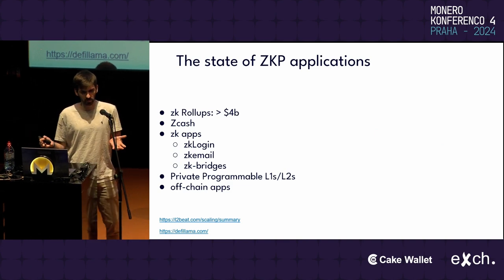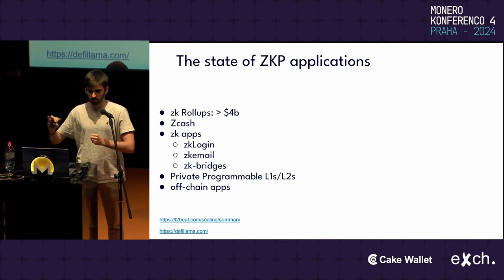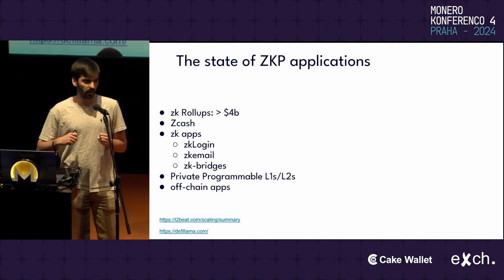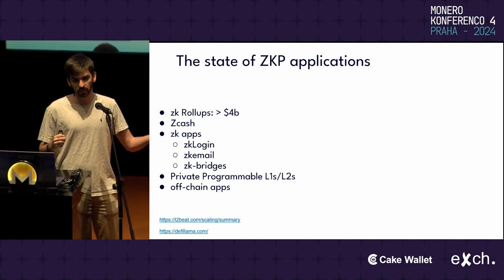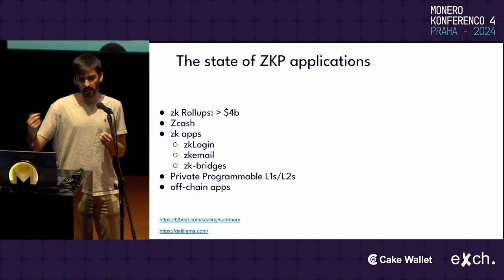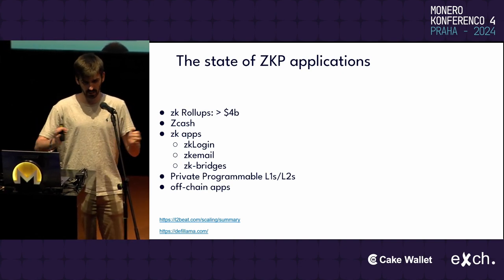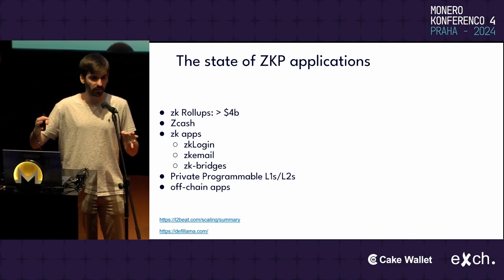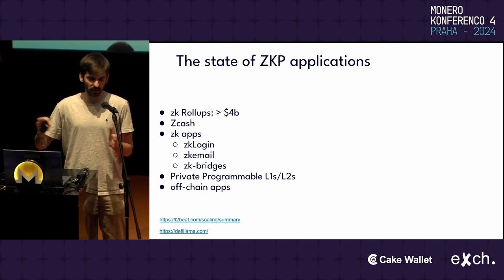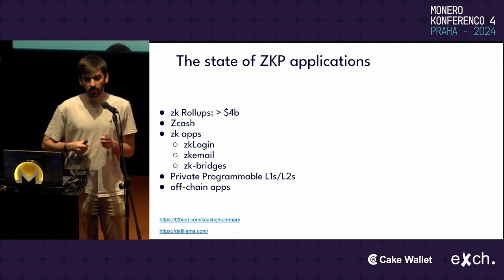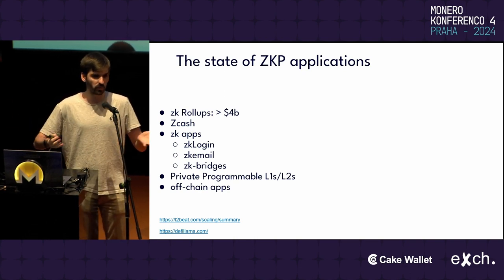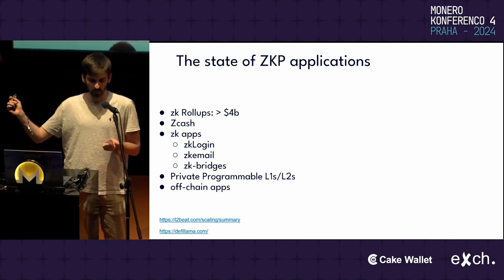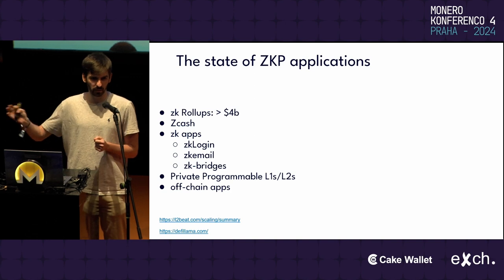What is the state of zero-knowledge proofs? Zero-knowledge proofs, for anyone not aware of them, are basically cryptographic protocols that allow one party, the prover, to prove a statement to a verifier, potentially without revealing almost nothing about that statement. The main use case is to use a protocol that has the zero-knowledge property, which we will define in a bit.